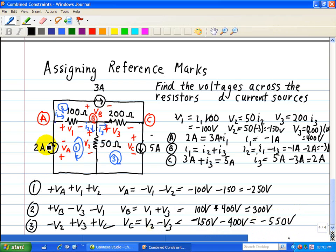So now we know what the voltages across the 2 amp, 3 amp, and 5 amp current sources, and they're respectively minus 250 volts, 300 volts, and minus 550 volts. And that completes finding the voltages and currents for this circuit.